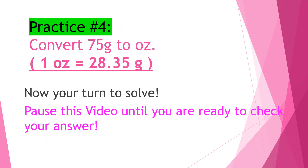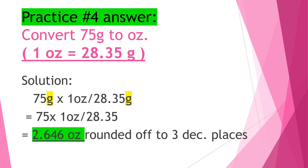Practice number four: Convert 75 grams to ounces. Our conversion factor is 1 ounce equals 28.35 grams. Now it's your turn to solve — pause this video until you are ready to check your answer. The answer is 2.646 ounces, rounded off to three decimal places. I hope we are on the same page.